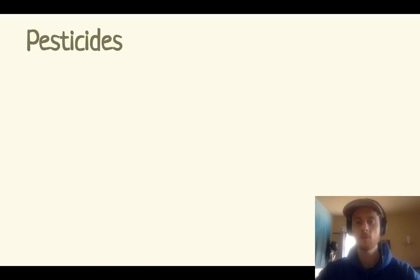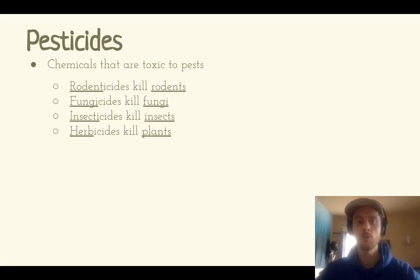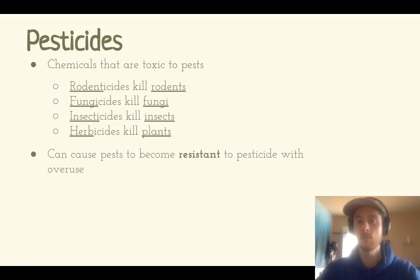Pesticides are chemicals that are toxic to pests — organisms such as rodents or fungi that may harm crops. There are different pesticides for different types of organisms: rodenticides to kill rodents, insecticides for insects, herbicides for plants, and fungicides for fungi. While pesticide use may decrease pests and increase profits in the short term, there are longer term consequences.